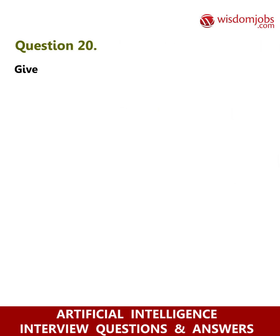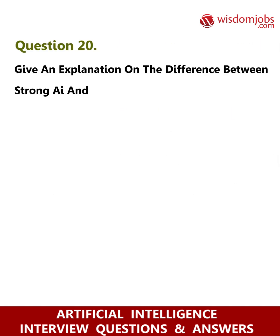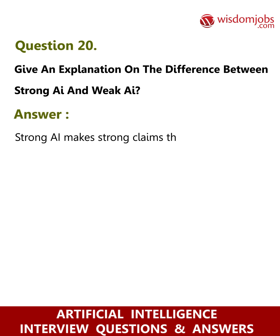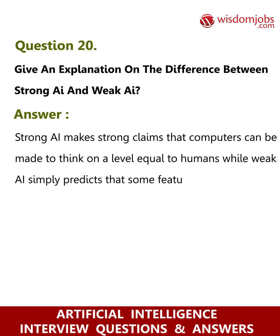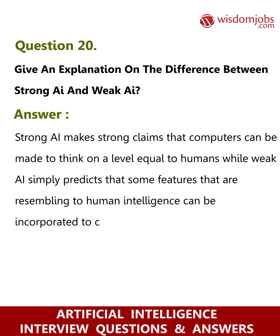Question 20: Give an explanation on the difference between strong AI and weak AI. Answer: Strong AI makes strong claims that computers can be made to think on a level equal to humans, while weak AI simply predicts that some features resembling human intelligence can be incorporated into computers to make them more useful tools.